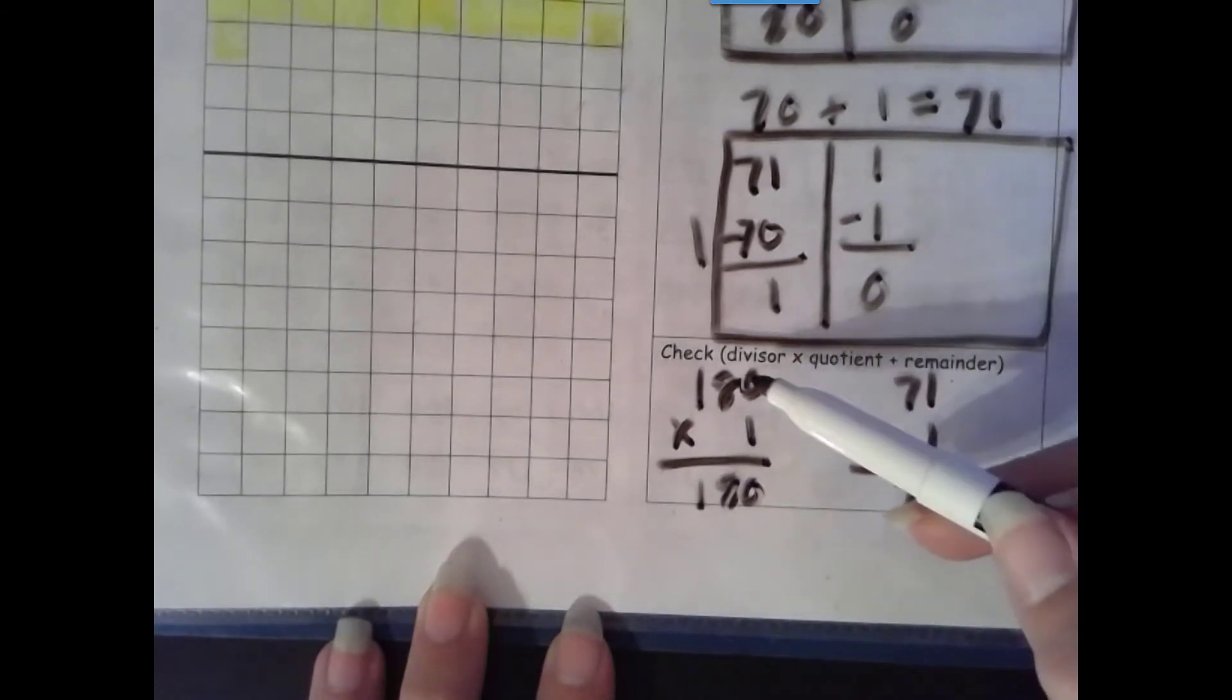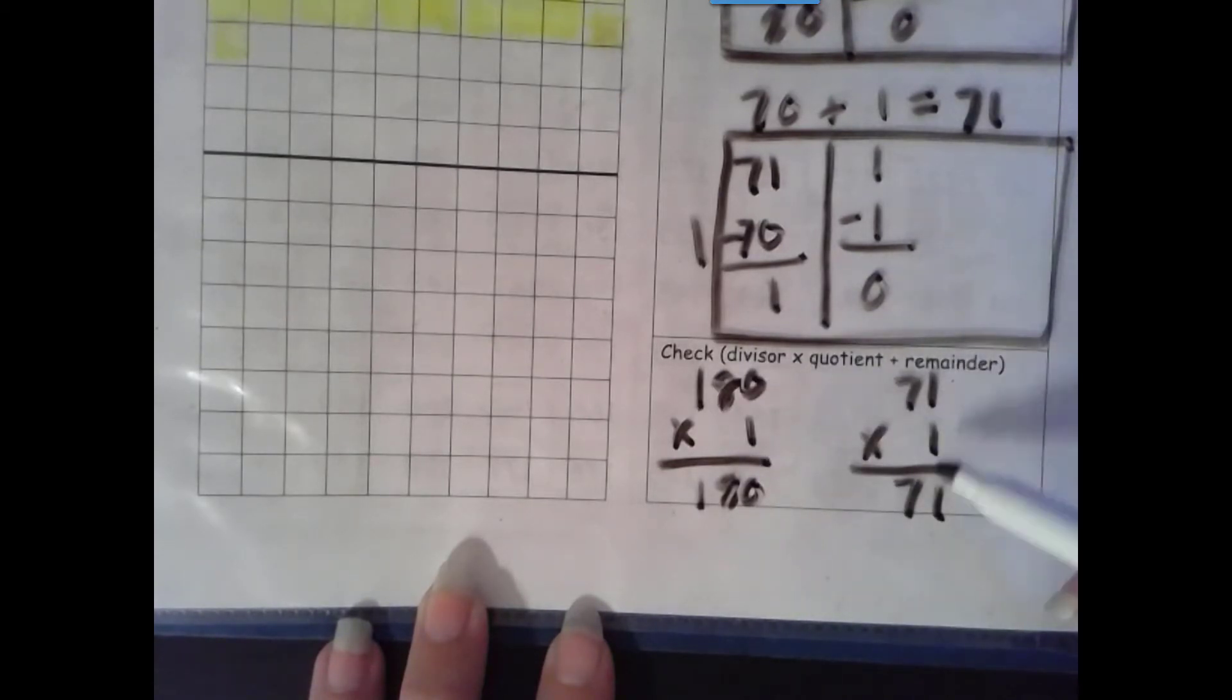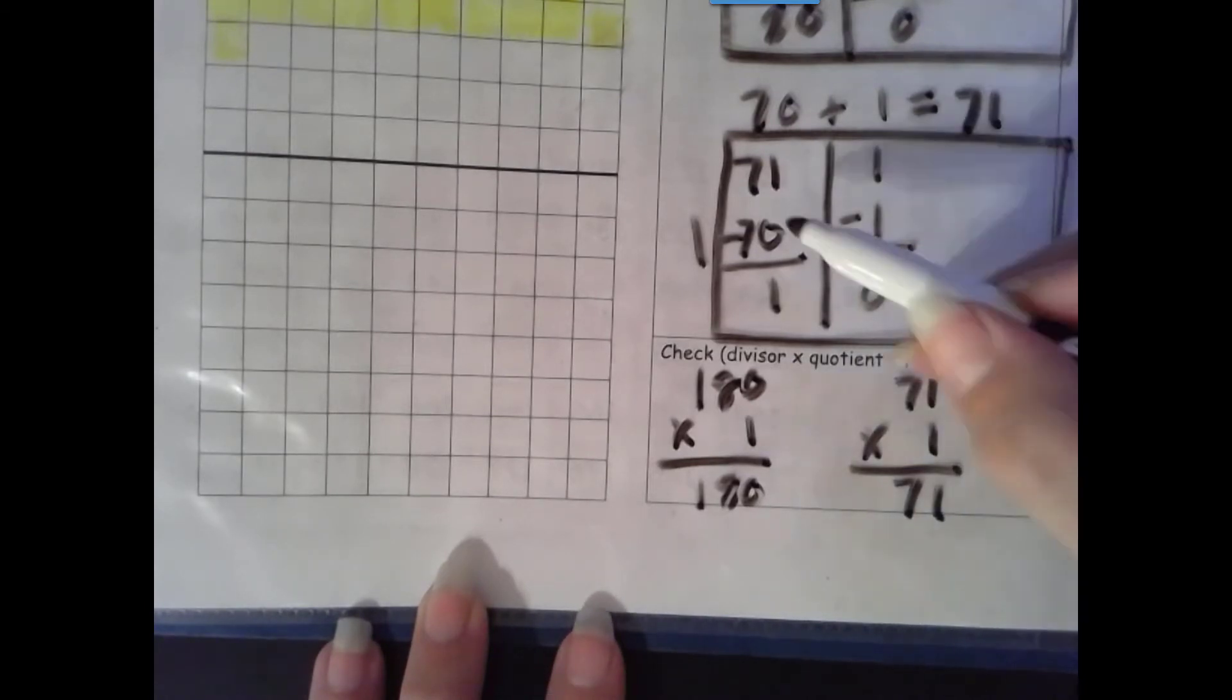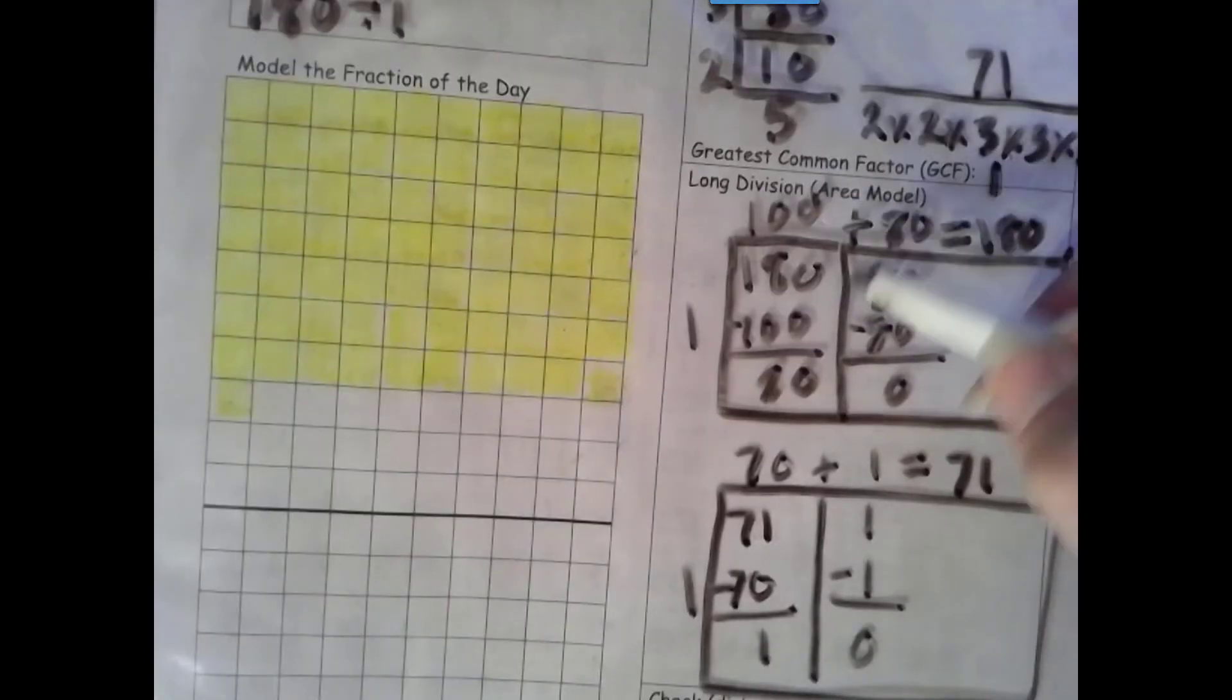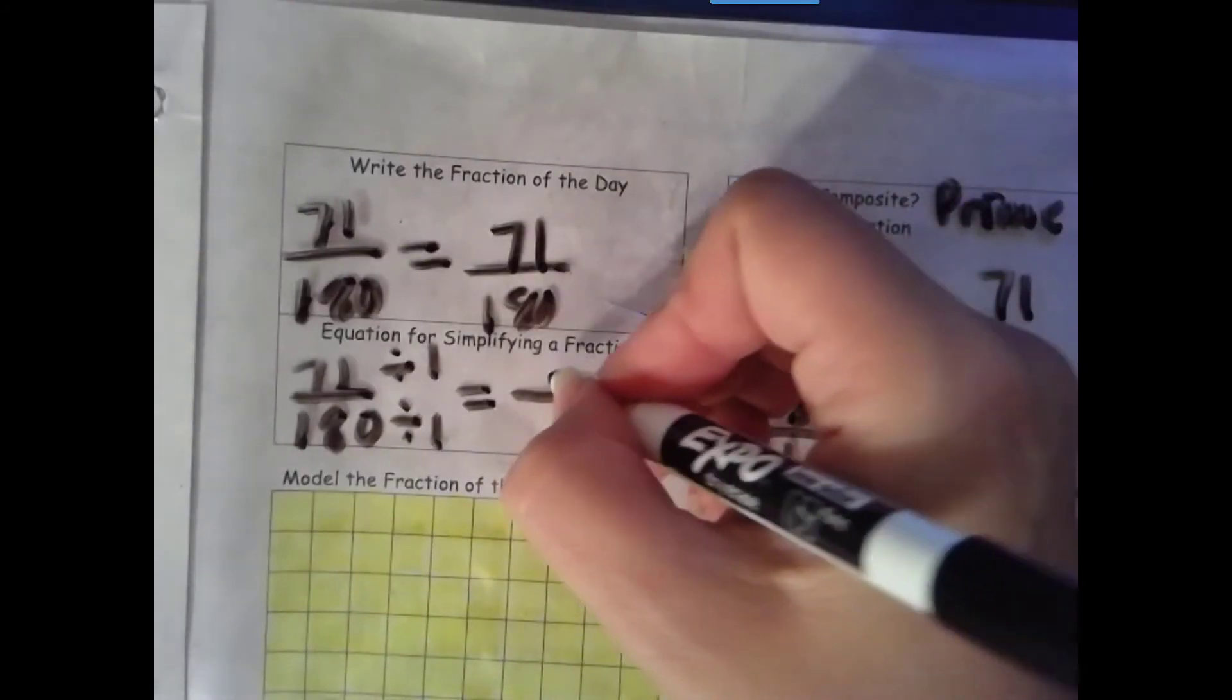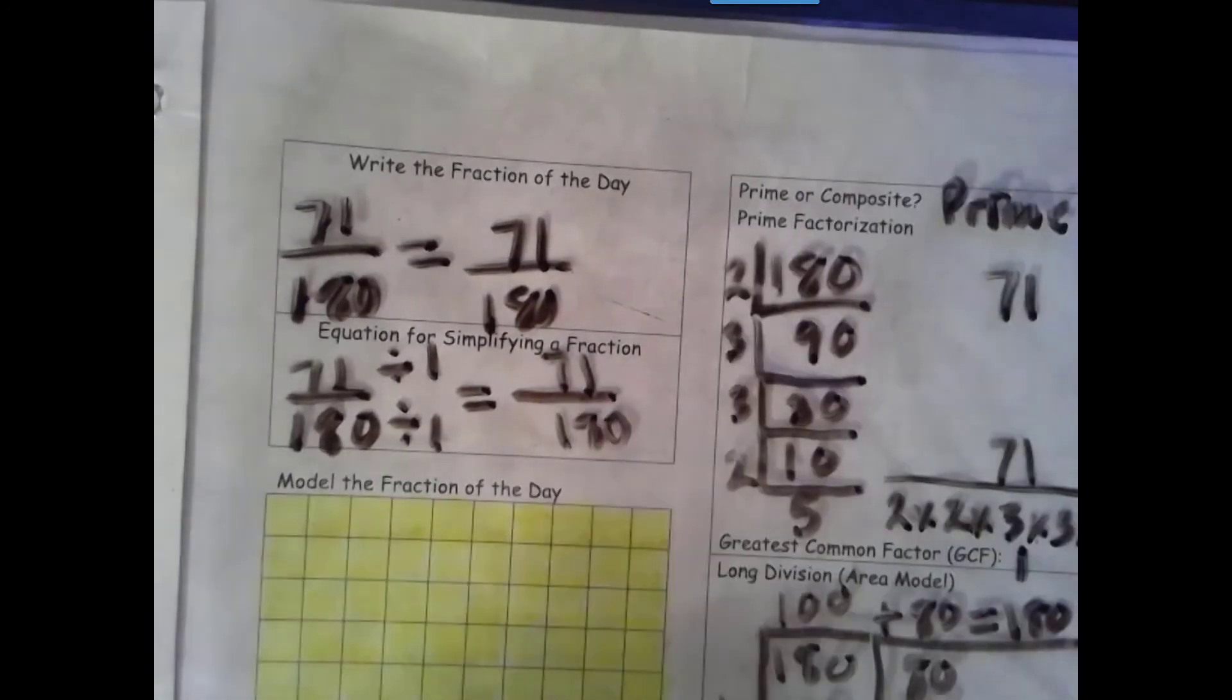One group of 0, one group of 0, one group of 8 tenths, one group of 100, one group of 1, one group of 7 tenths stays the same. So 71, that matches, check. 180, that matches our dividend up here, check. So our numerator is definitely 71 and our denominator is definitely 180.